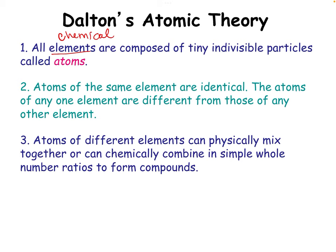Atoms of different elements can physically mix together, or can chemically combine in simple whole number ratios to form a compound. Physically mixed together — those are mixtures. To form a compound, that would be a chemical reaction. So atoms can just hang out together in a mixture, maintaining their properties, or they can combine to form something brand new, which would be called a compound.